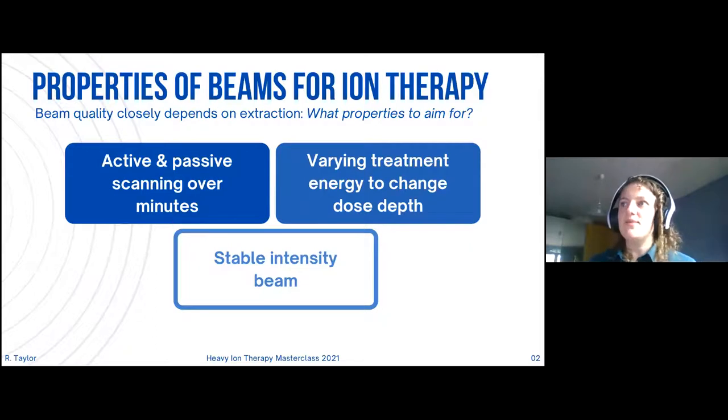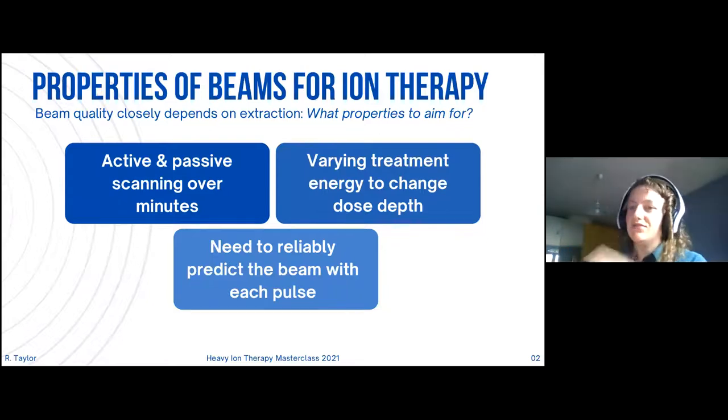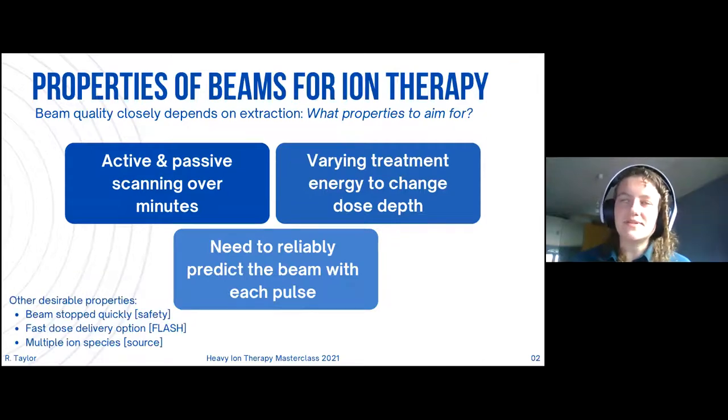The most important factor: the beam has to be of stable intensity. Each time we fire the beam we need to predict exactly what it looks like, exactly where it's going. This needs to be consistent and reliable. If sometimes we get loads of intensity and sometimes we get none at all, then this just isn't suitable for medical purposes. There are a few other desirable properties: we want the beam to be stopped very quickly if something goes wrong for safety, we would like to have the option of fast dose delivery for flash, and we would like to have the option of multiple ion species.